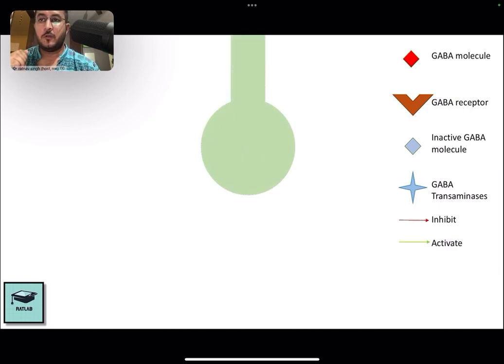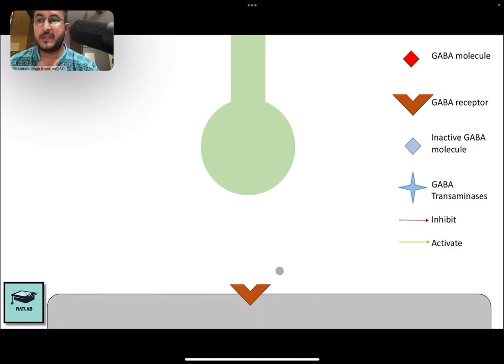We have a neuron which will contain the GABA molecules and we have the postsynaptic membrane on which the GABA receptor is present. This GABA receptor is actually an ion channel receptor which conducts chloride ions, causing hyperpolarization of the postsynaptic membrane and thereby inhibition.